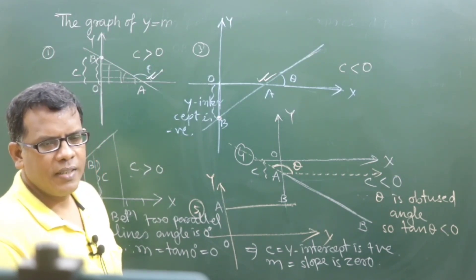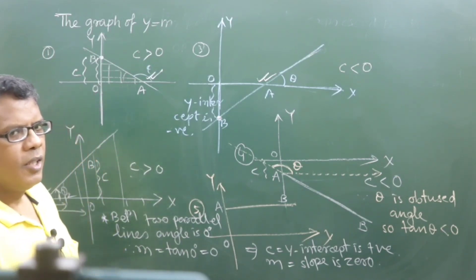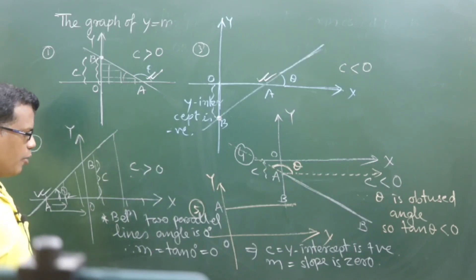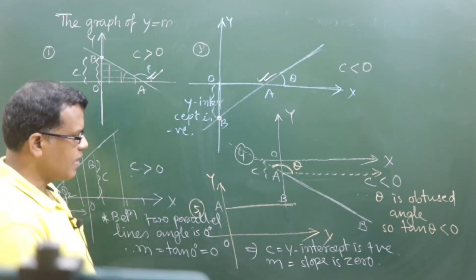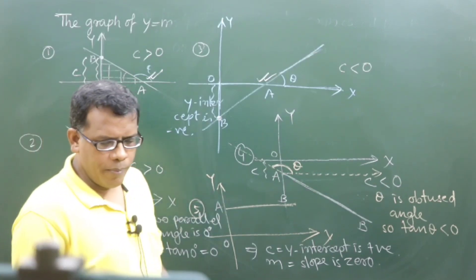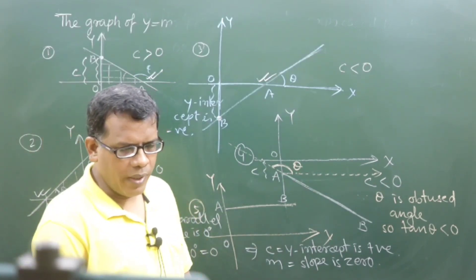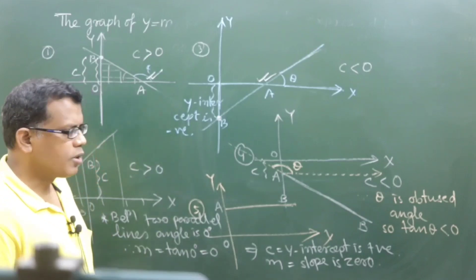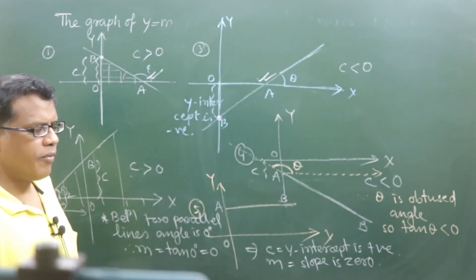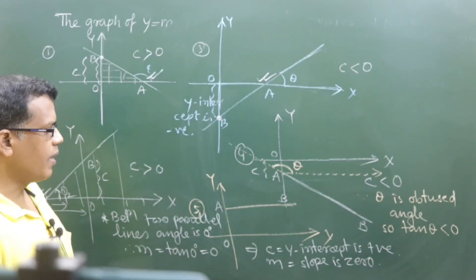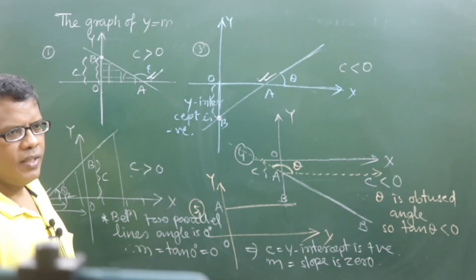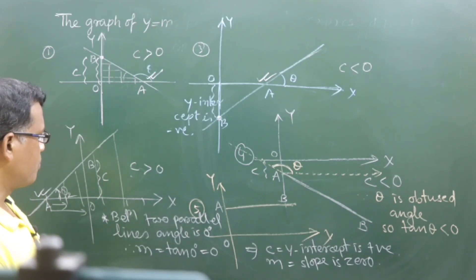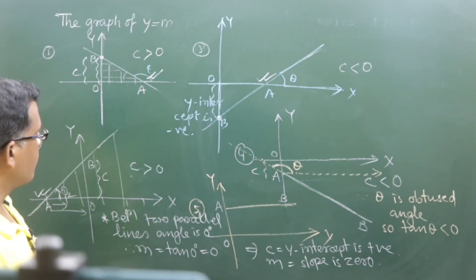Are you getting it? The slope of this line is 0 because this line makes a 0-degree angle with the positive direction of the x-axis, so that is why it will be 0.